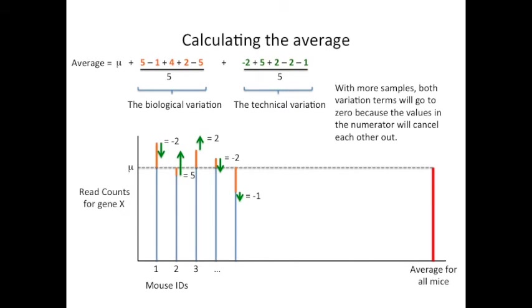And just like before, because the numerators contain both positive and negative numbers that cancel each other out, with more samples, these variation terms will go to zero.